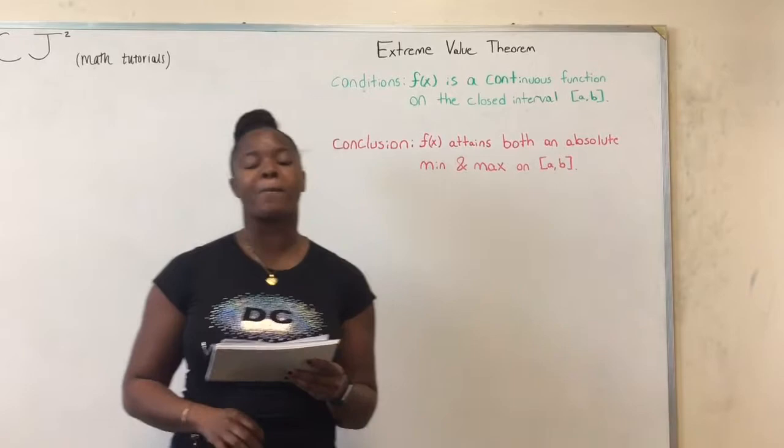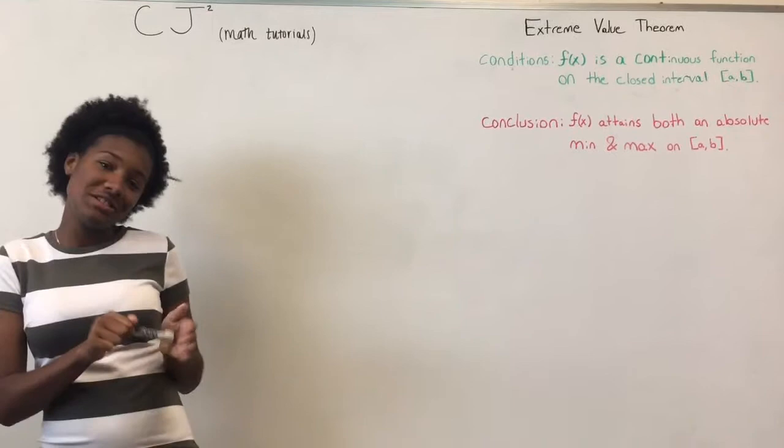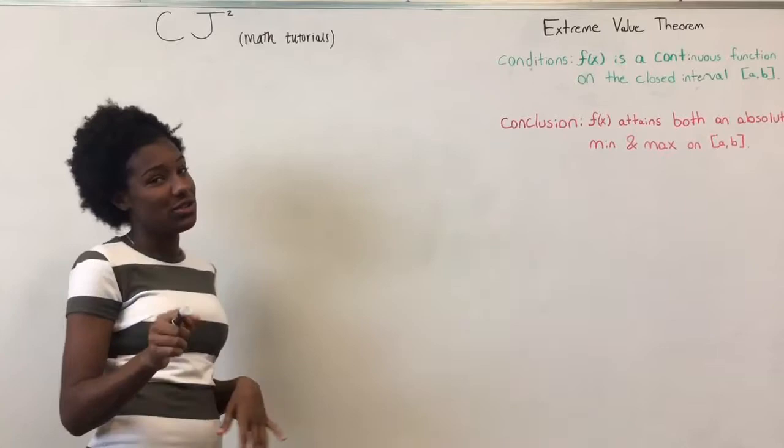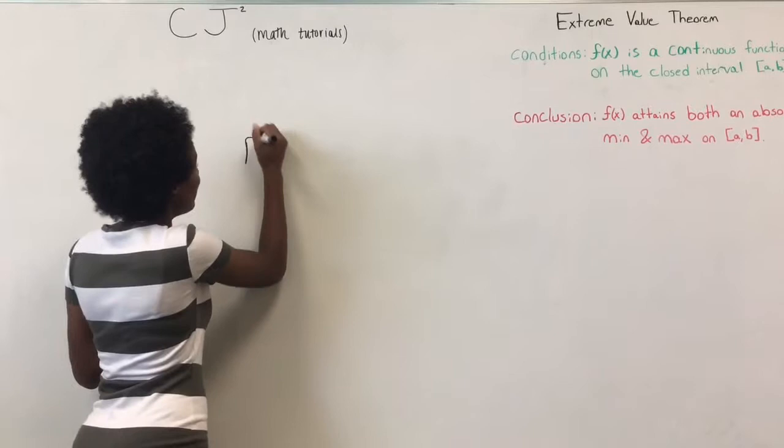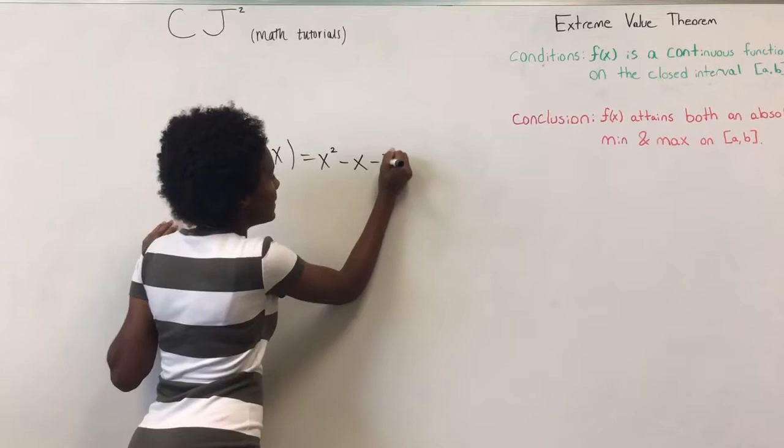Hi, I'm Sienna Jarvis and I'm going to show you an example of when the conditions of the extreme value theorem are not met so that the extreme value theorem cannot be applied. We're going to start with the function F of X equals X squared minus X minus 2 all over X plus 1.